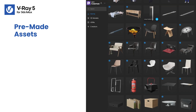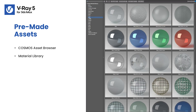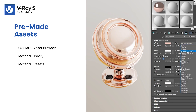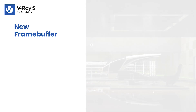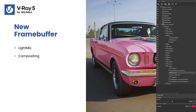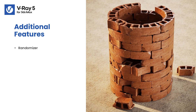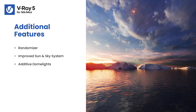VRay 5 now contains a huge library of pre-made assets. The new Cosmos Asset Browser provides 3D models and HDRIs. The material library has a huge selection of ready-to-use materials and by using material presets we can pre-configure our shaders. The new framebuffer contains great features such as the new light mix that enables us to modify the illumination in real time, and with compositing we can modify already rendered images directly within the framebuffer. Additional features include the new randomizer to avoid ugly texture repetitions, a fully overhauled sun and sky system for more realistic exterior lighting, and with additive dome lights we can combine multiple dome lights for a more interesting illumination.